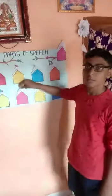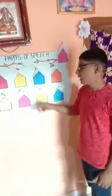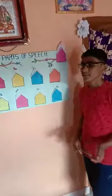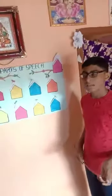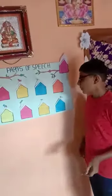Example sentence: 'The book is on the table.' In this sentence, 'on' is the preposition.